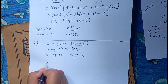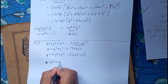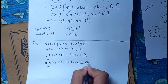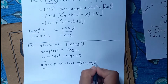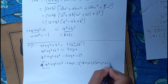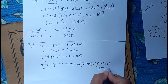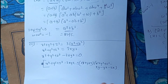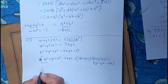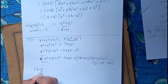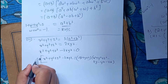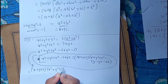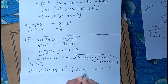We can see from the formula: x cubed plus y cubed plus z cubed minus 3xyz equals zero. We have the formula which is x plus y plus z times x squared plus y squared plus z squared minus xy minus yz minus zx. Since x plus y plus z equals 0, the whole expression equals 0.